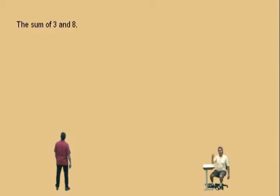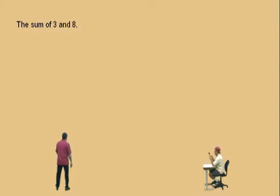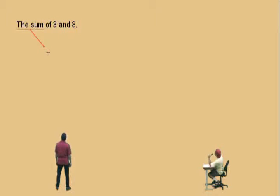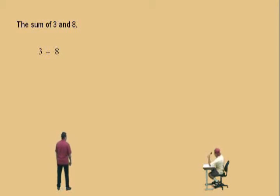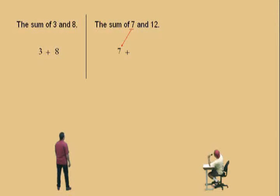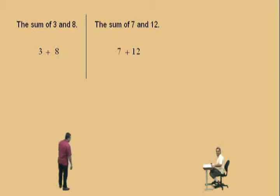Okay, Charlie, go ahead. Now, make sure you put your microphone into math mode, and go ahead and read the sentence slowly. Remember, the microphone will translate whatever you say into math. Go ahead, Charlie. The sum of three and eight. Very nice there, Charlie. Let's do another one. The sum of seven and twelve. Very nice there.